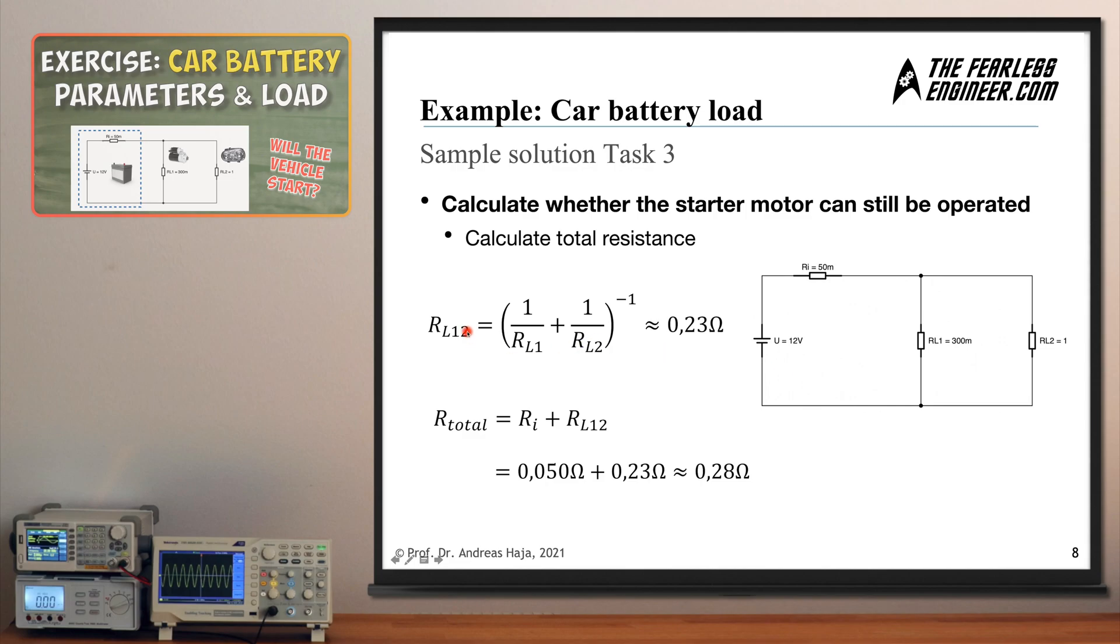And in order to do this, let's quickly compute the overall resistance value of the two load resistors. And if you have watched the video on how to compute the total resistance of a parallel setup, you know that you simply have to sum up the inverse values of the individual resistances and then invert the result again, which gives you an overall resistance of 0.23 ohms for this setup here consisting of two resistors. And if you combine it in series with the internal resistance of the battery, which is at 50 milliohms, you get an overall resistance of 0.28 ohms for this entire setup here. This is the first step in task number three.